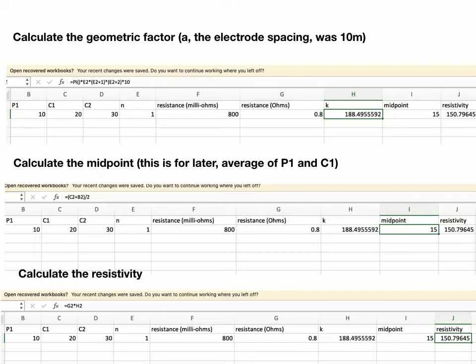Times E2 plus 1, times E2 plus 2, times 10. 10 being the electrode spacing. So that's the formula I gave you before. That goes in this next column.